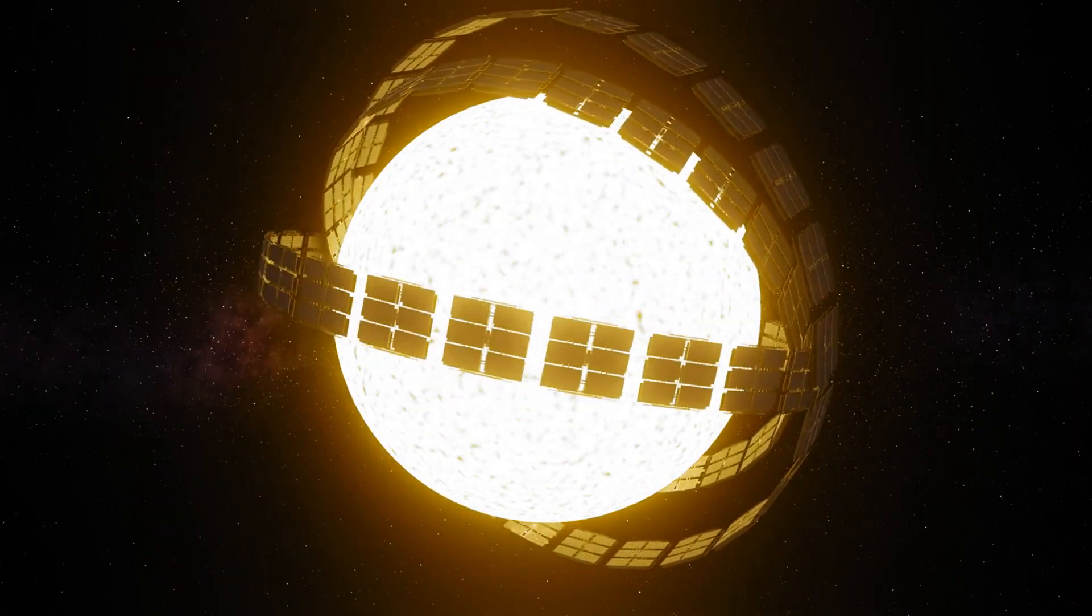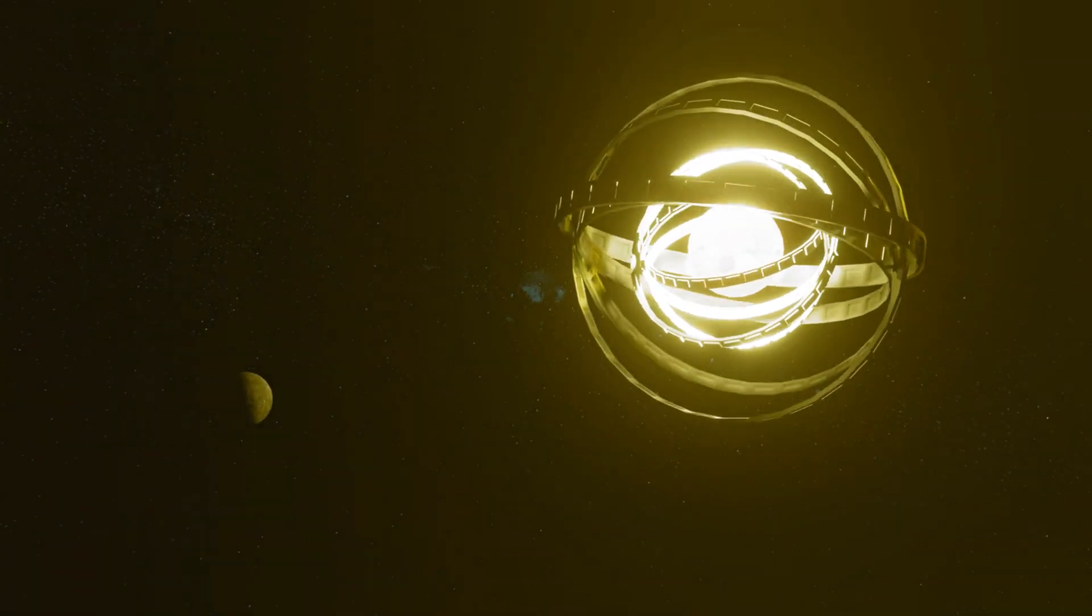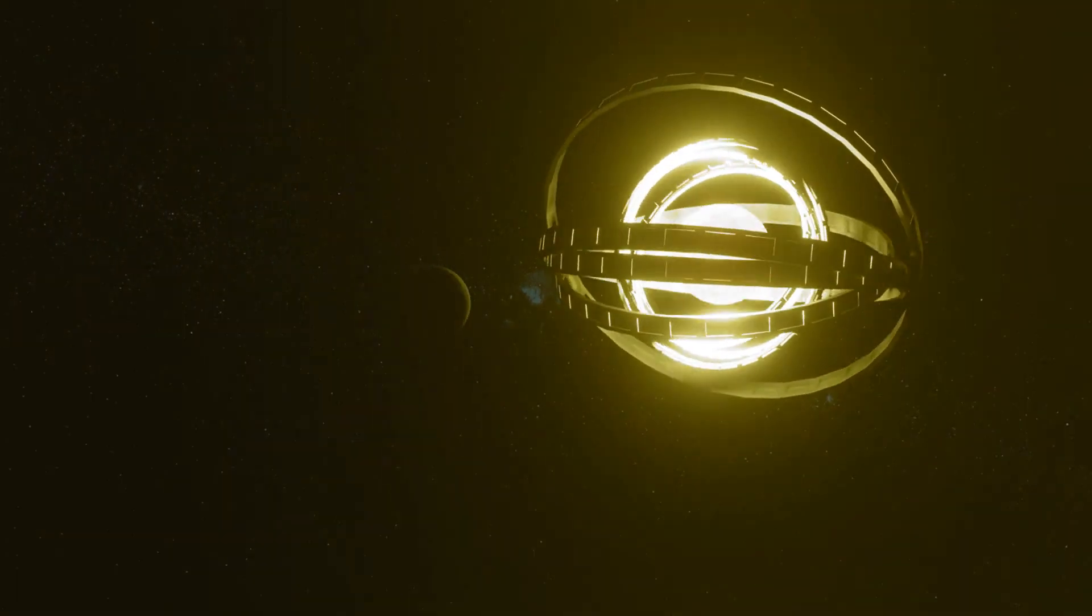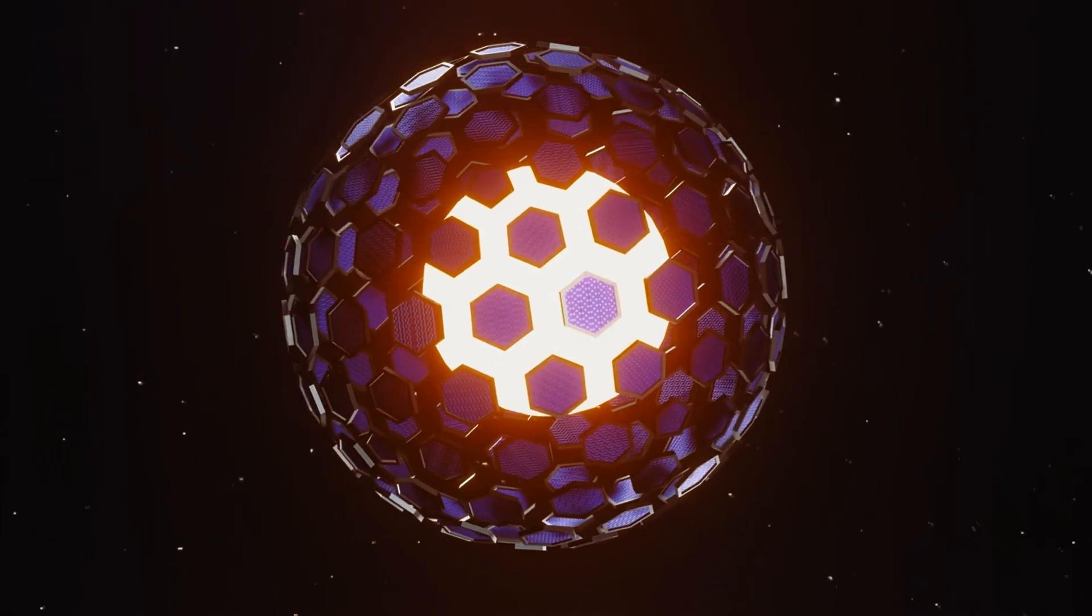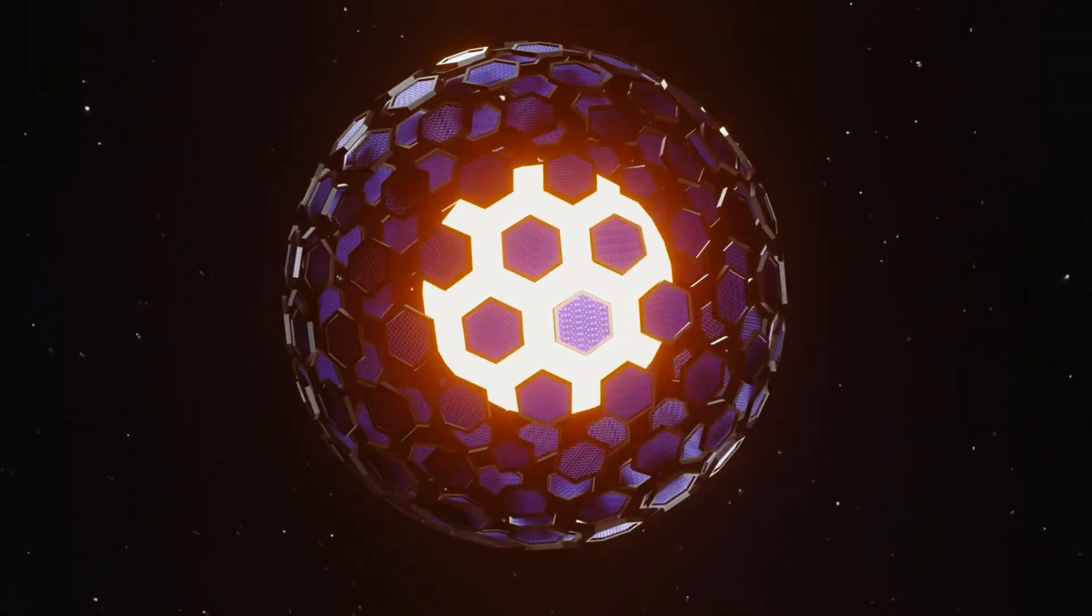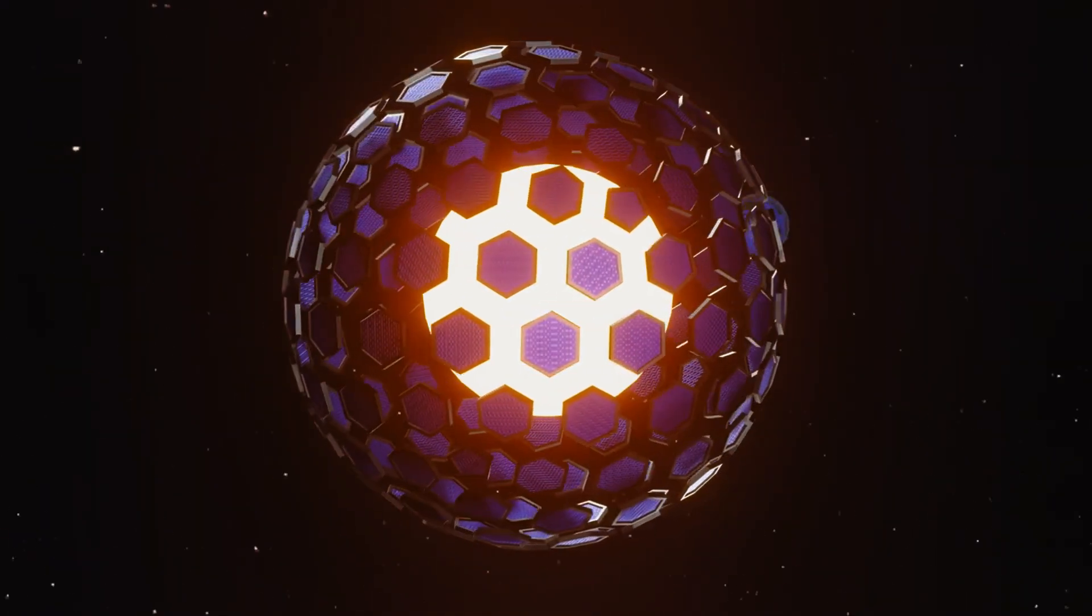First off, let's talk about what a Dyson sphere actually is. Imagine a giant structure that completely surrounds our sun, capturing almost all of its energy output. It's like putting a lampshade around the sun, except this lampshade is billions of miles wide and generates enough power to make your electricity bill look like pocket change.